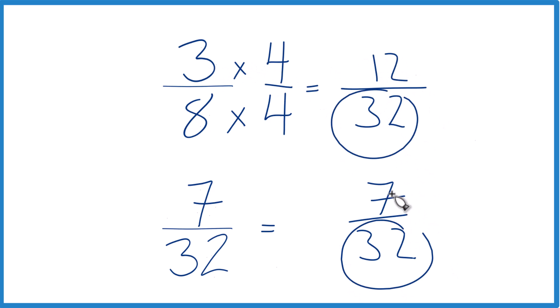same denominators, compare the numerators, and you'll find out that 12 is larger than 7. So 12 32nds is larger than 7 32nds, and 3 8ths is larger than 7 32nds as well, since these two are the same thing. They're equivalent fractions. It's Dr. B. Thanks for watching.